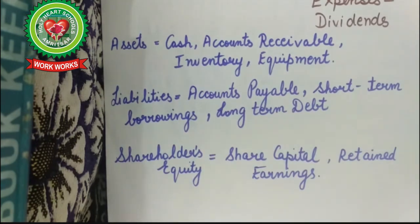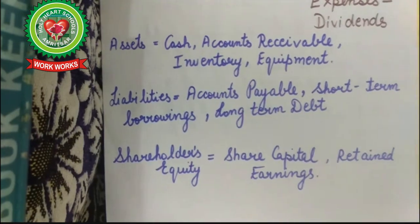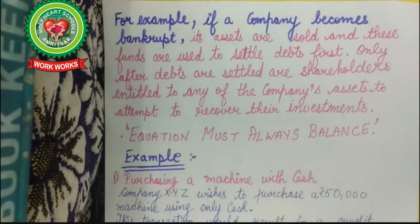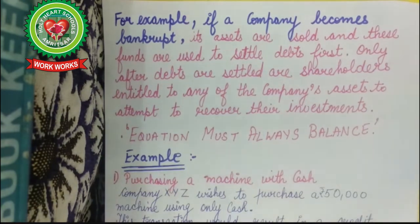For example, if a company becomes bankrupt, its assets are sold and the funds are used to settle debts first. Only after debts are settled are shareholders entitled to the company's assets to recover their own investments. But the equation must always balance. Let us justify this statement with the help of an example.